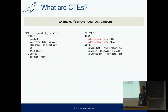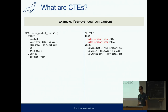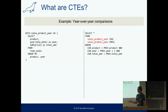Here's another example. We're trying to compare how products did in the current year versus the previous year. We're using the same CTE table twice — first we define all the sales for all products in a given year, and then we join them together to see which products performed better this year as opposed to last year.